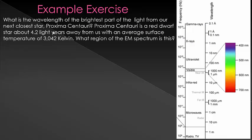Let's do an example using Wien's law to calculate the temperature of our neighboring star, Proxima Centauri. This star is our nearest neighbor and is 4.2 light years away. I tell you that the average temperature is 3042 Kelvin, and I ask you to tell me what region of the electromagnetic spectrum astronomers find the radiation in.